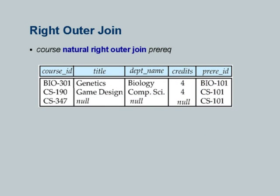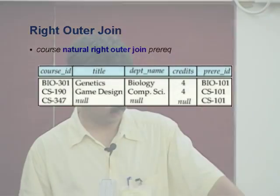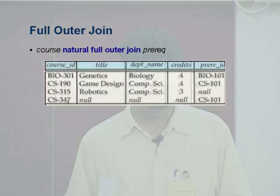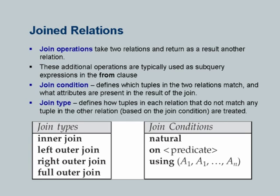The natural right outer join is similar except the right input — in this case prereq — is preserved. The attributes course ID and prereq ID from prereq are preserved, so CS347/101 appears in the result. The other attributes from course (title, department name, credits) are all null. The full outer join is a combination of both: it includes the inner join results, plus the extra tuples from the left outer join, and the extra tuples from the right outer join — preserving both inputs.